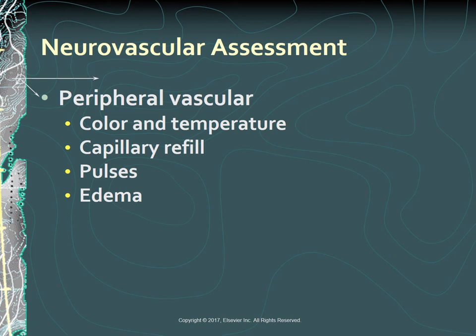Document clinical findings before fracture treatment is initiated to avoid doubt about whether a problem discovered later was missed during the original examination or caused by the treatment. Your neurovascular assessment should include musculoskeletal injuries, as they have the potential to cause changes in neurovascular status of an injured extremity. Application of a cast or constrictive dressing, poor positioning, and physiological responses to traumatic injury can cause nerve or vascular damage, usually distal to the injury. The neurovascular assessment should include peripheral vascular assessment—color, temperature, capillary refill, peripheral pulses, and edema—and a peripheral neurologic assessment including sensation, motor function, and pain.